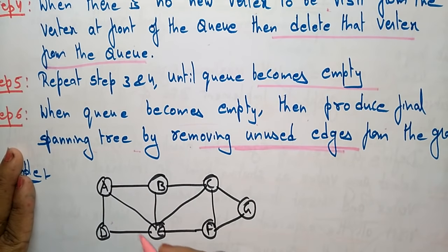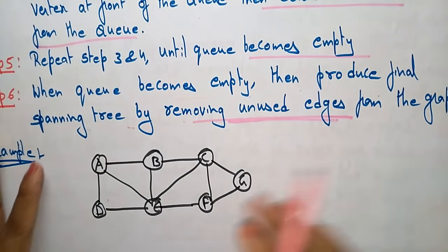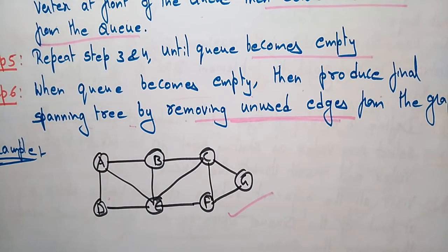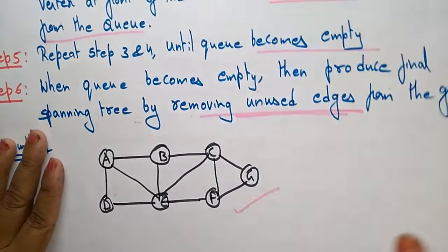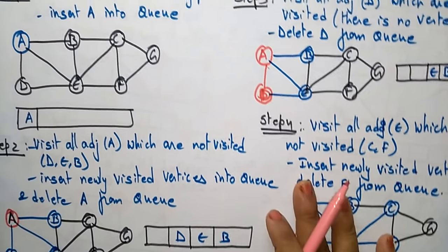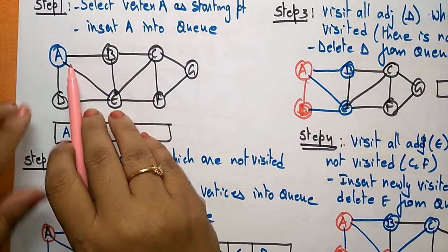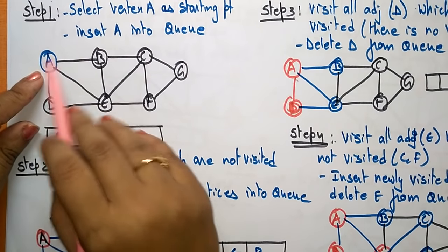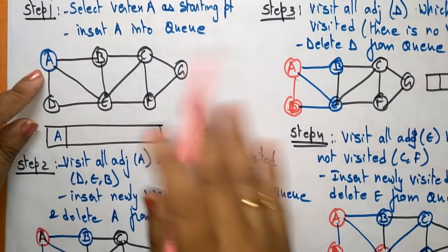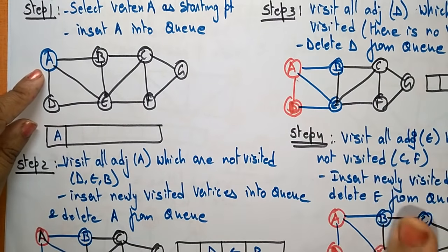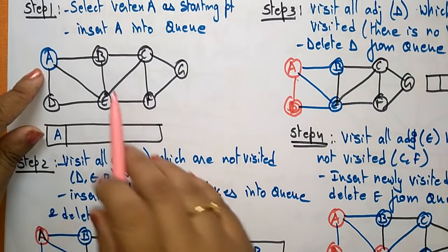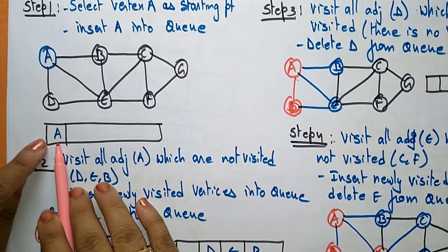Whatever unused edges are present in the graph should be removed. I am taking the same example used for DFS so you can compare how the same graph is represented in DFS and BFS. Select vertex A as the starting point. Blue indicates a visited vertex, black is an unvisited vertex, and red is the vertex deleted from the queue. Place A in the queue.